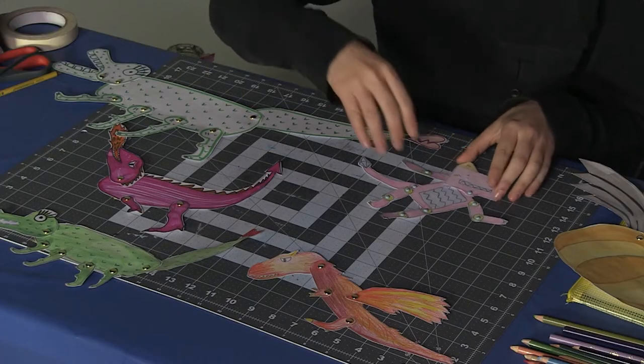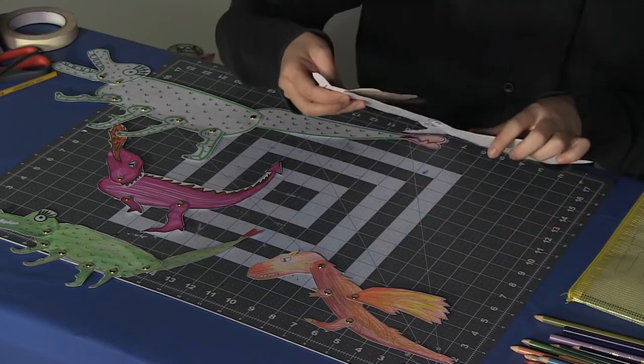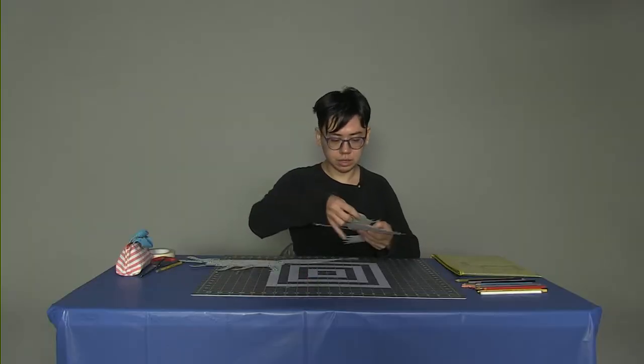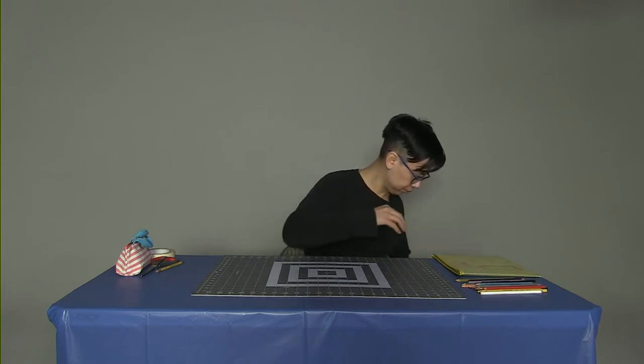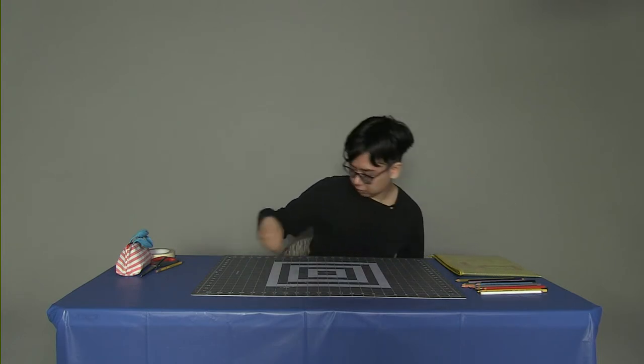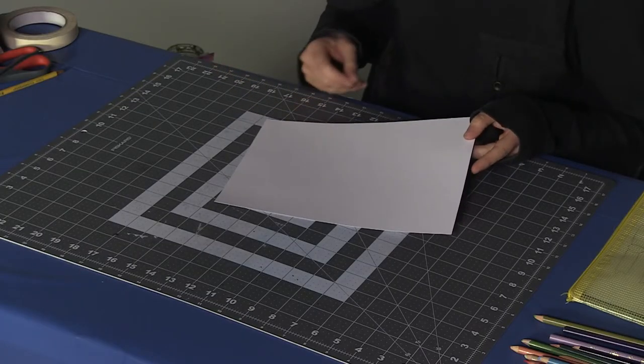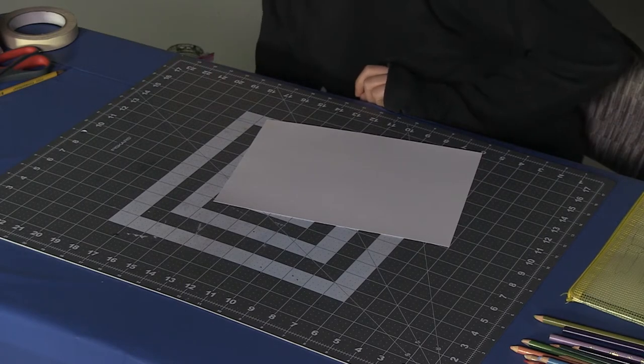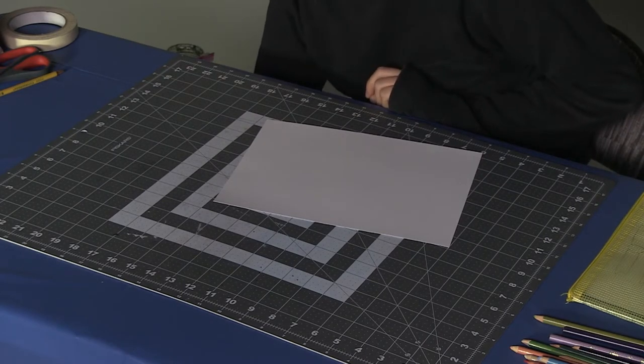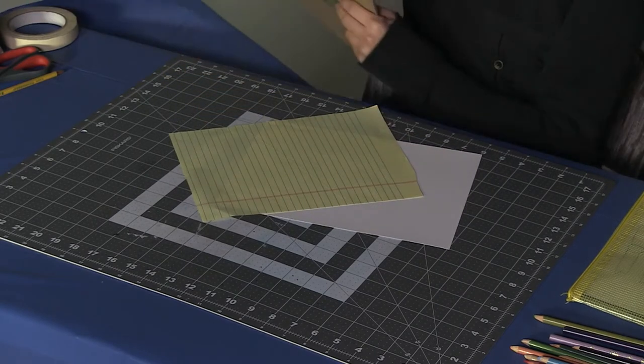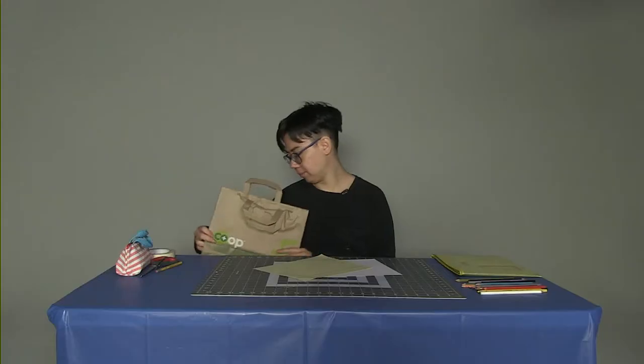So the first thing that you want to do to make a paper puppet is come up with an idea of what your character might be. So I'm going to go ahead and put these away for a minute so that we can start brainstorming. You'll want a piece of paper, a blank piece of paper like this is great, but if you don't have blank paper, that's okay. You can also use notebook paper or even cut up a piece of a plastic bag or a paper bag.